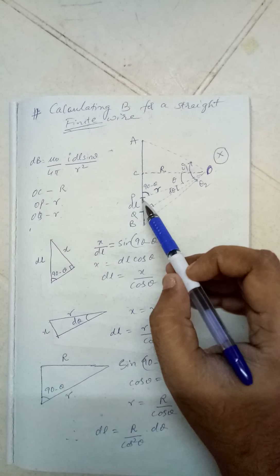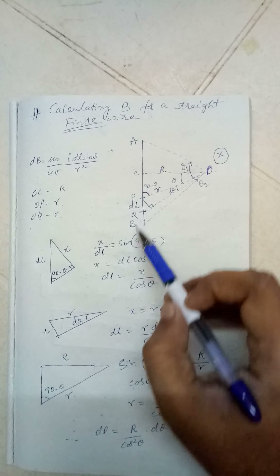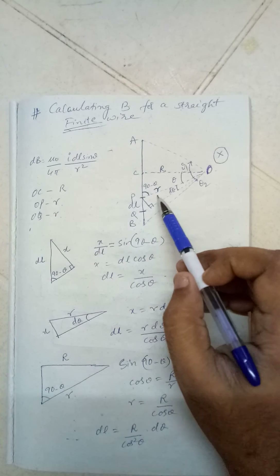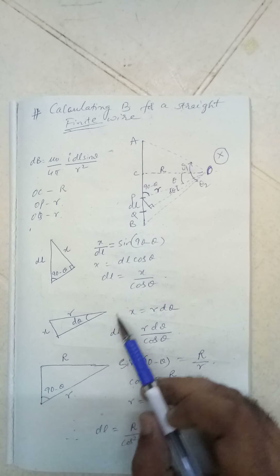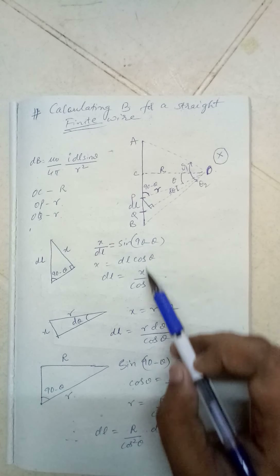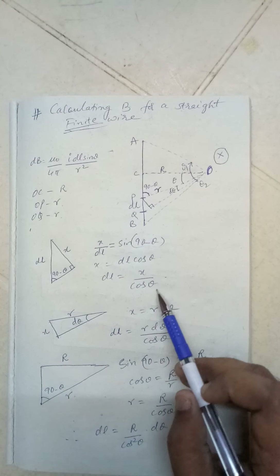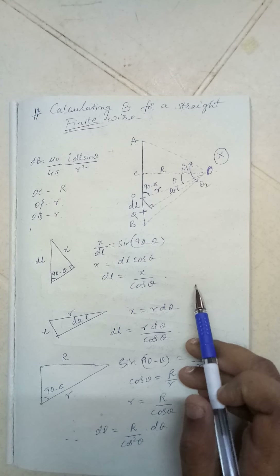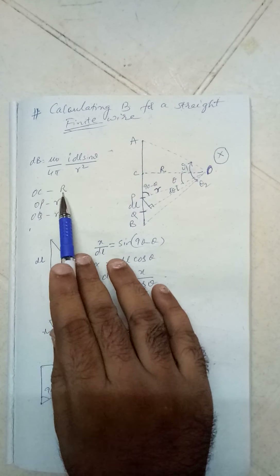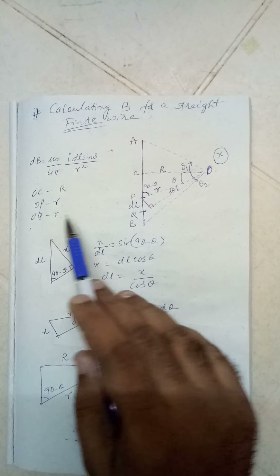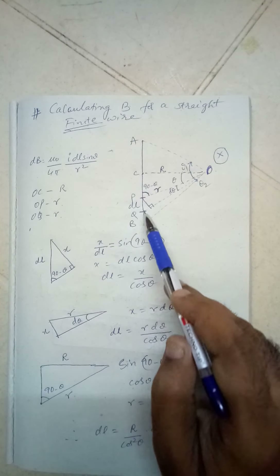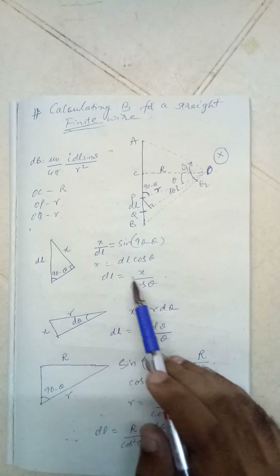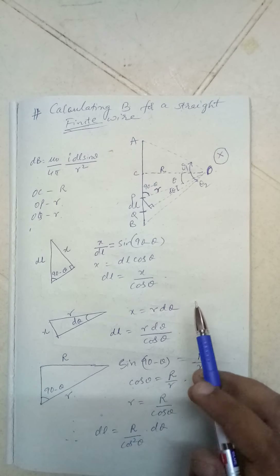Remember: wherever you take the element, you have to consider that particular distance. OC is capital R, OP is small r, and because this length is very very small, it is also almost equal to small r.